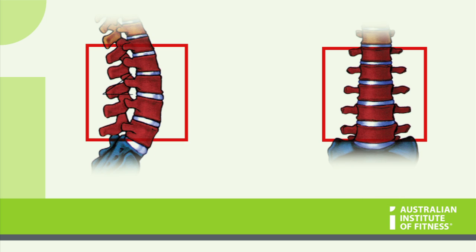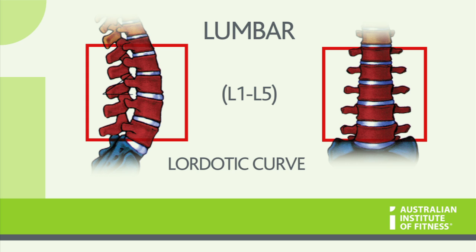Moving down, we have the lumbar region, and it consists of five big vertebrae, L1 through to L5. Like the cervical region, it also has a lordotic curve.